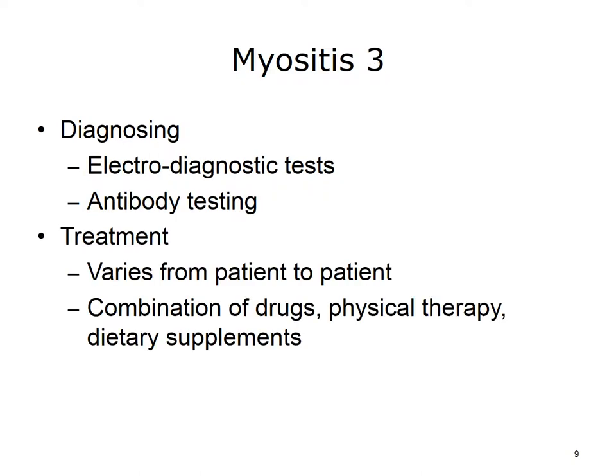Electro-diagnostic tests, such as Magnetic Resonance Imaging scans or MRI, might reveal inflammation in muscles. Electromyograms, or EMGs, might detect changes in muscles' electrical patterns that indicate muscle disease and indicate which muscles are affected. Antibody testing looks for antibodies; these more detailed blood tests confirm a diagnosis and provide insight into the possible course of the disease as well as potential complications. Treatment for myositis varies tremendously from patient to patient, and no one treatment works for everyone. Physicians may use a combination of drugs, physical therapy, or dietary supplements to treat the patient.